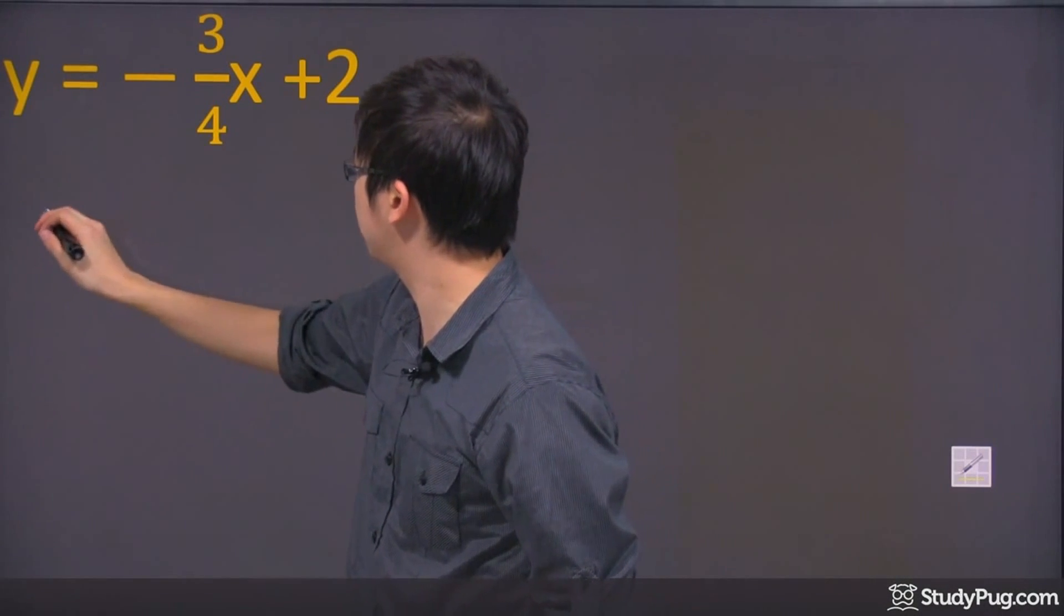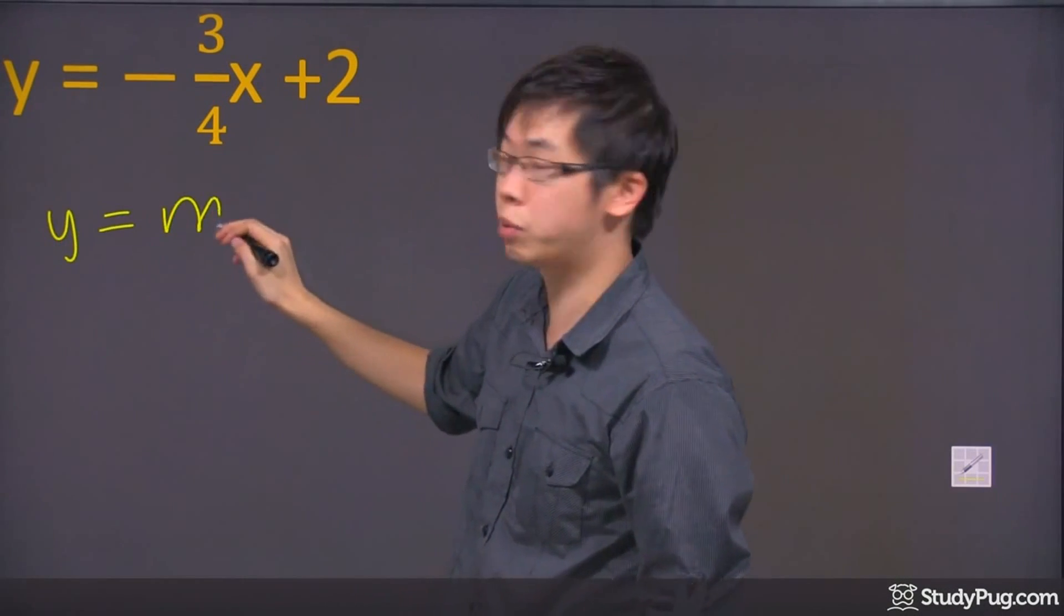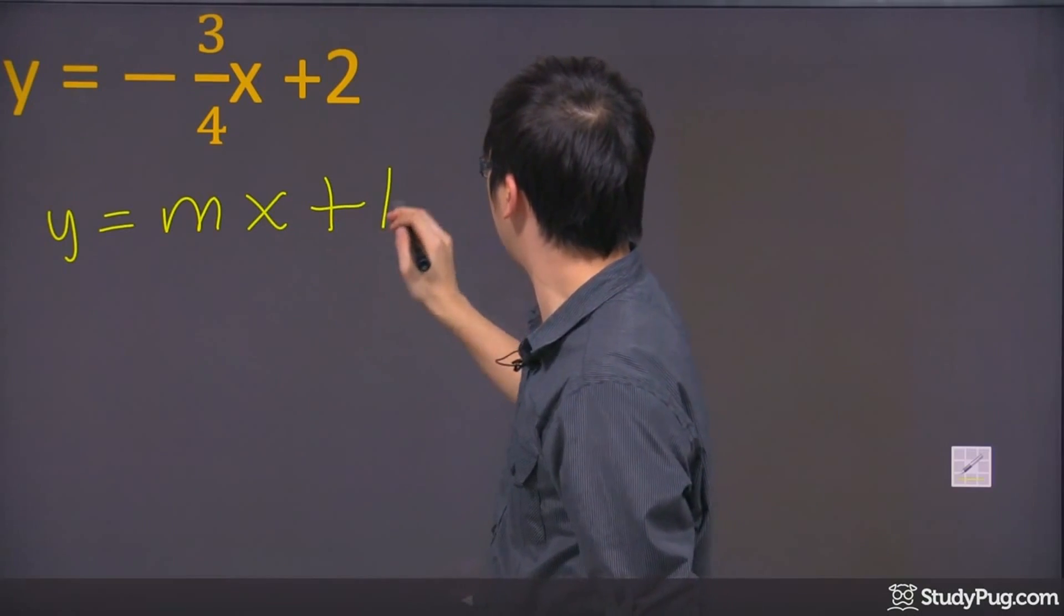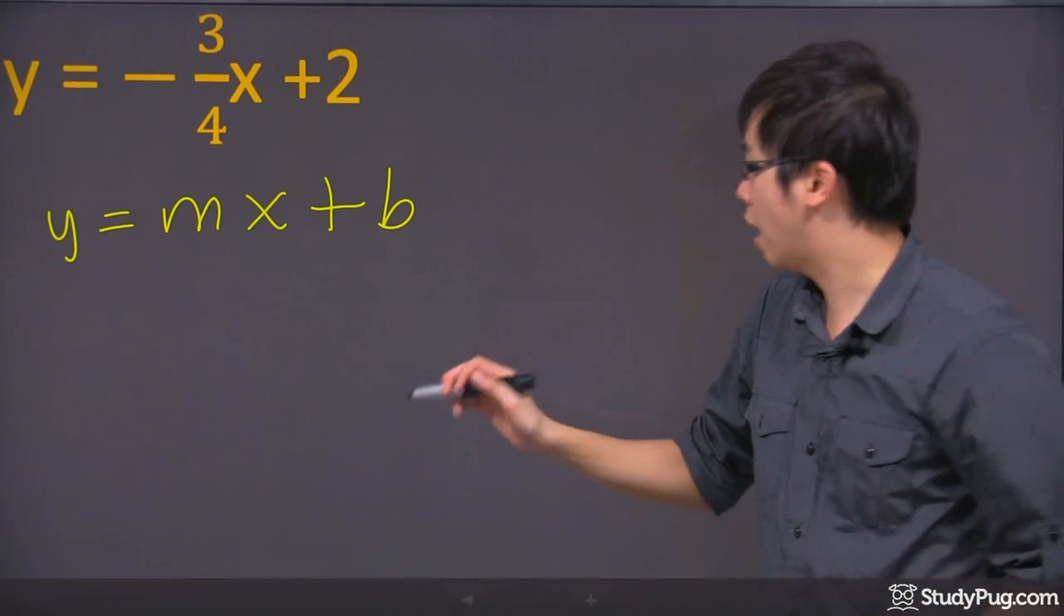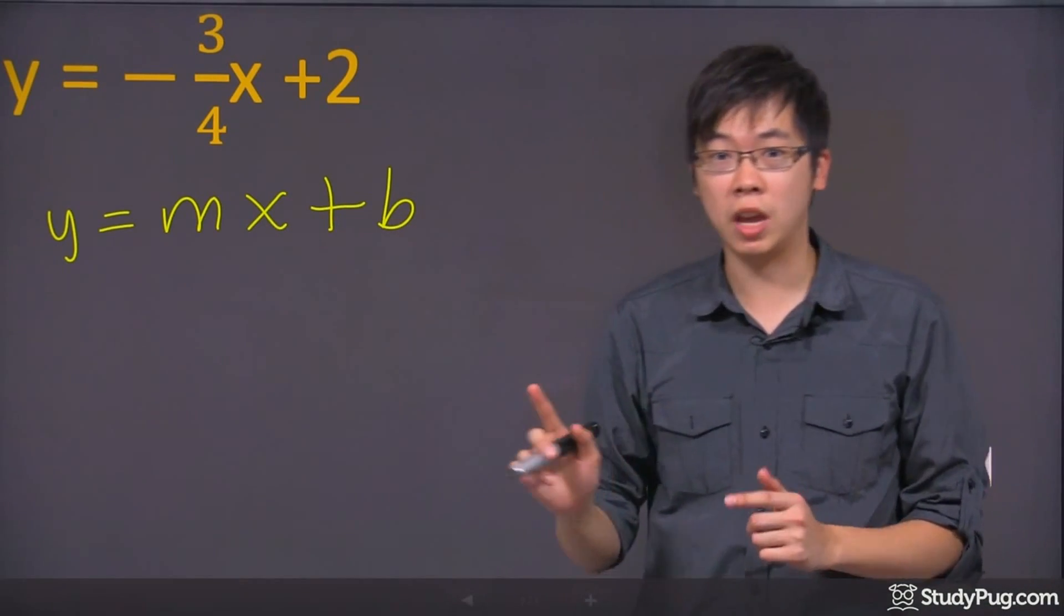You have to recognize that this is just your y equals mx plus b. So to graph this, remember, you have to start from the y-intercept first, and then do the slope.